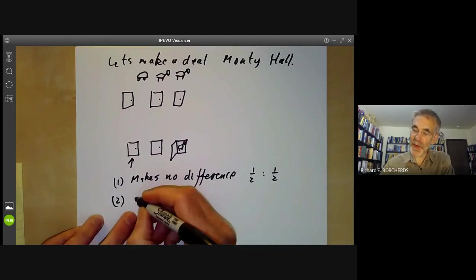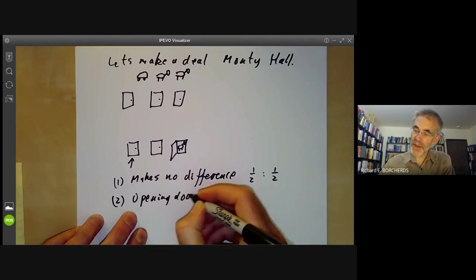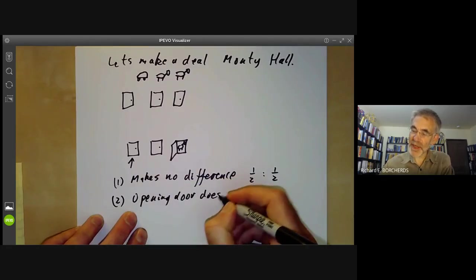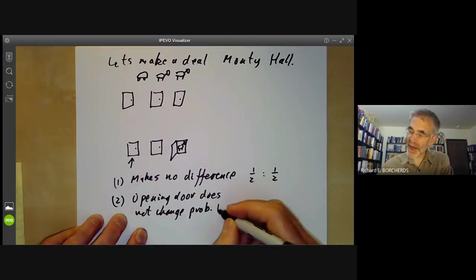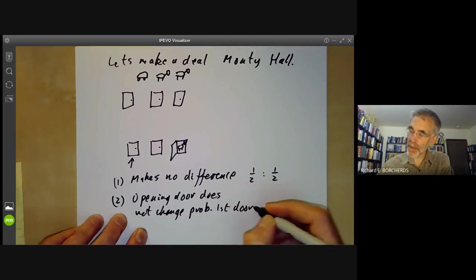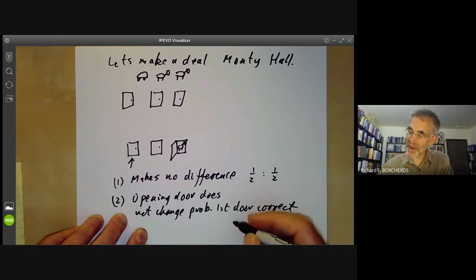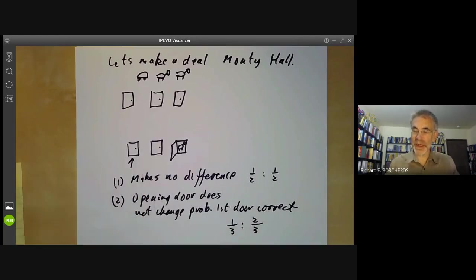The second argument says that opening the door does not change the probability. So the probability that the goat is behind the first door remains at one third and the probability that the goat is behind the second door is now two thirds. So you should switch.